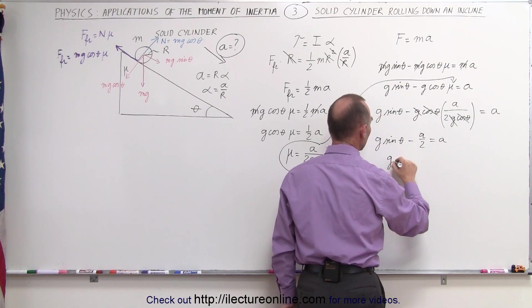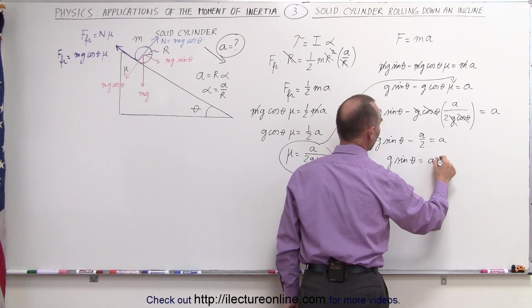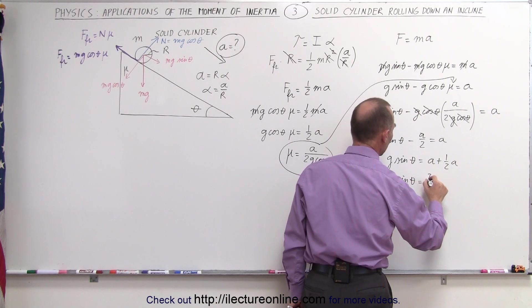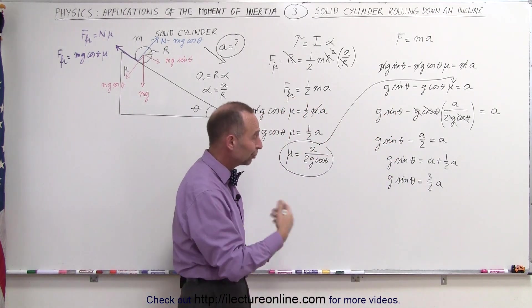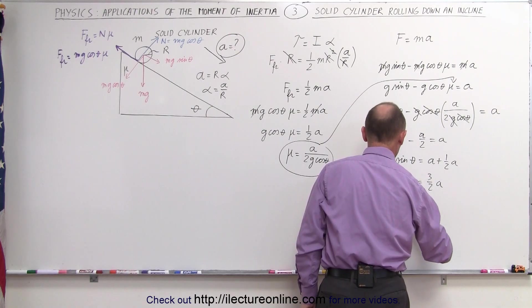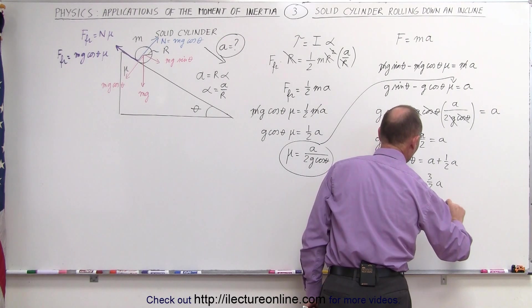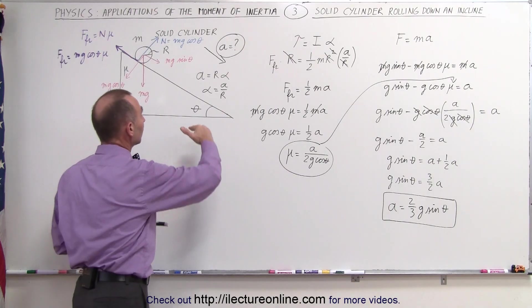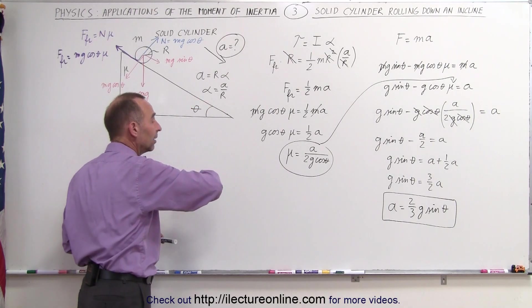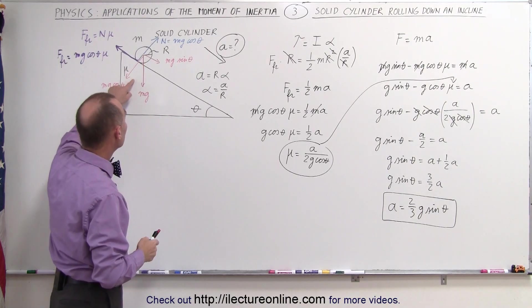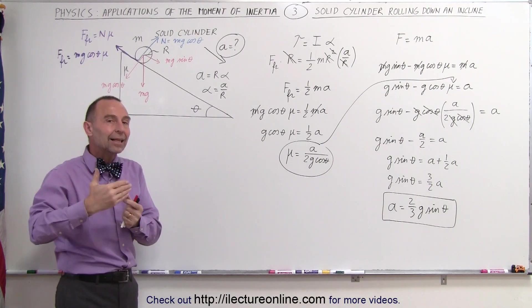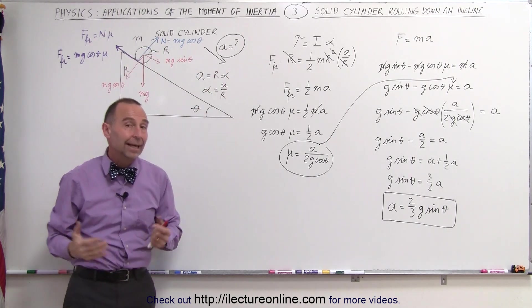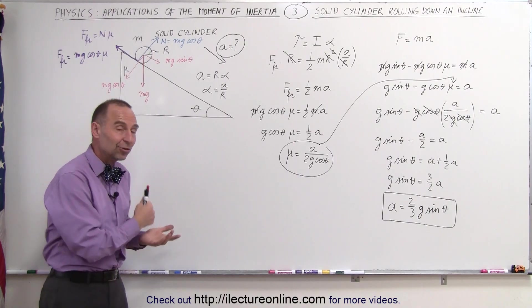Moving the a/2 term to the other side, we get g sine of theta equals a plus one-half a, which is 3/2 a. So g sine theta equals (3/2)a. Multiplying both sides by 2/3, the acceleration equals (2/3)g times the sine of theta — and that's the ultimate answer. You can see it's affected by the incline: the steeper the incline, the greater the acceleration. Friction is a catalyst, causing the object to spin by giving it a torque, which produces angular acceleration. That's how we solve a rolling object down an incline such as a solid cylinder.